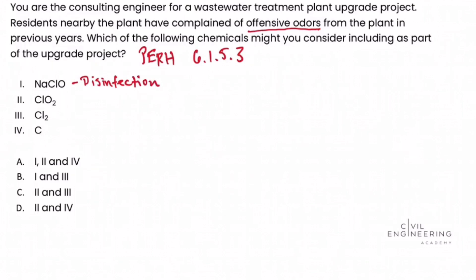Moving on to number two: ClO₂, chlorine dioxide. In the table, chlorine dioxide is used for taste and odor control. So it sounds like something that might be beneficial for what we're trying to solve for. But we'll continue down the list in our evaluation.